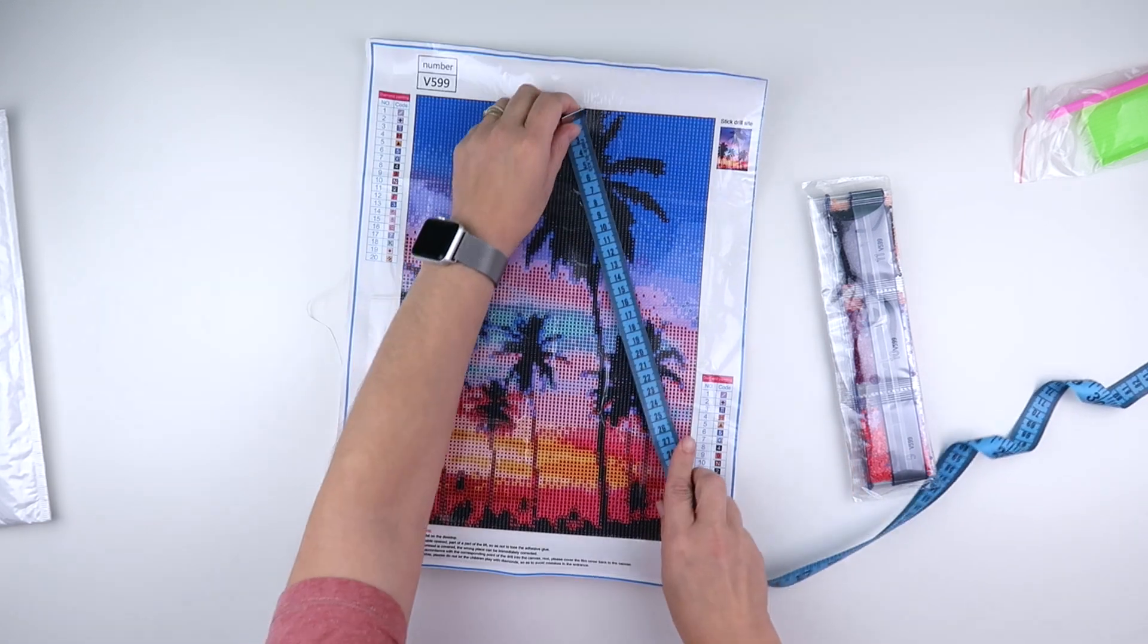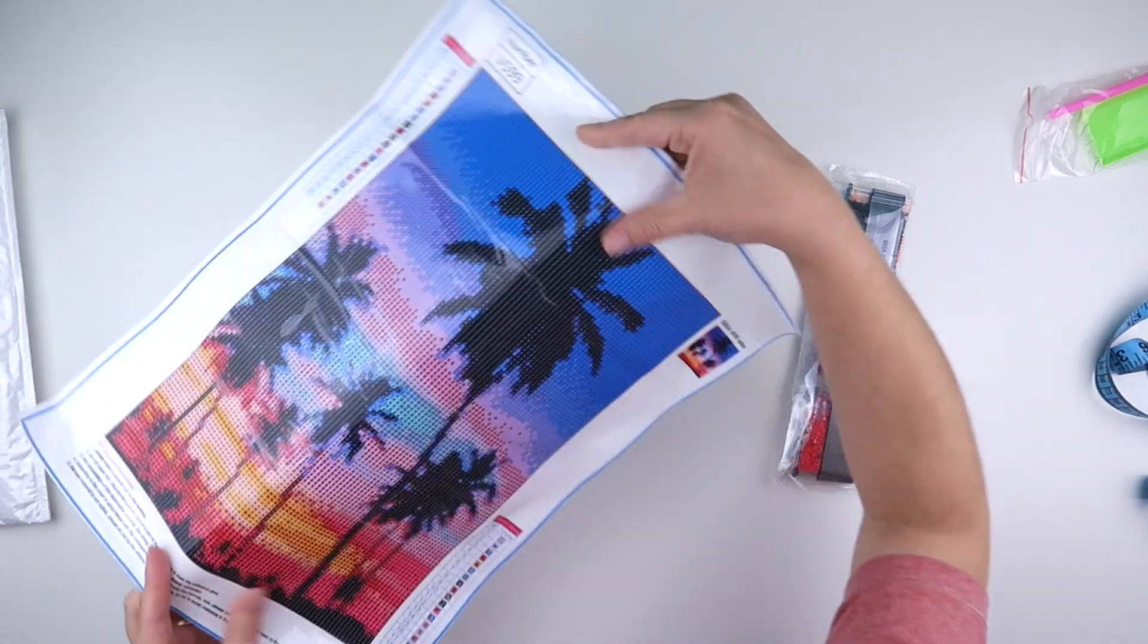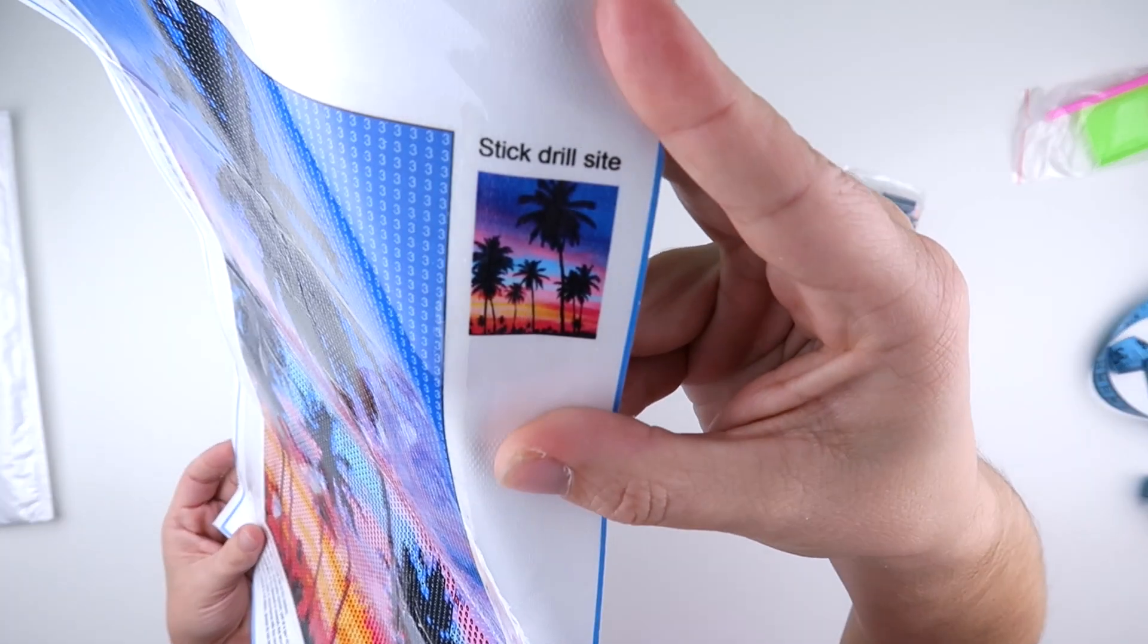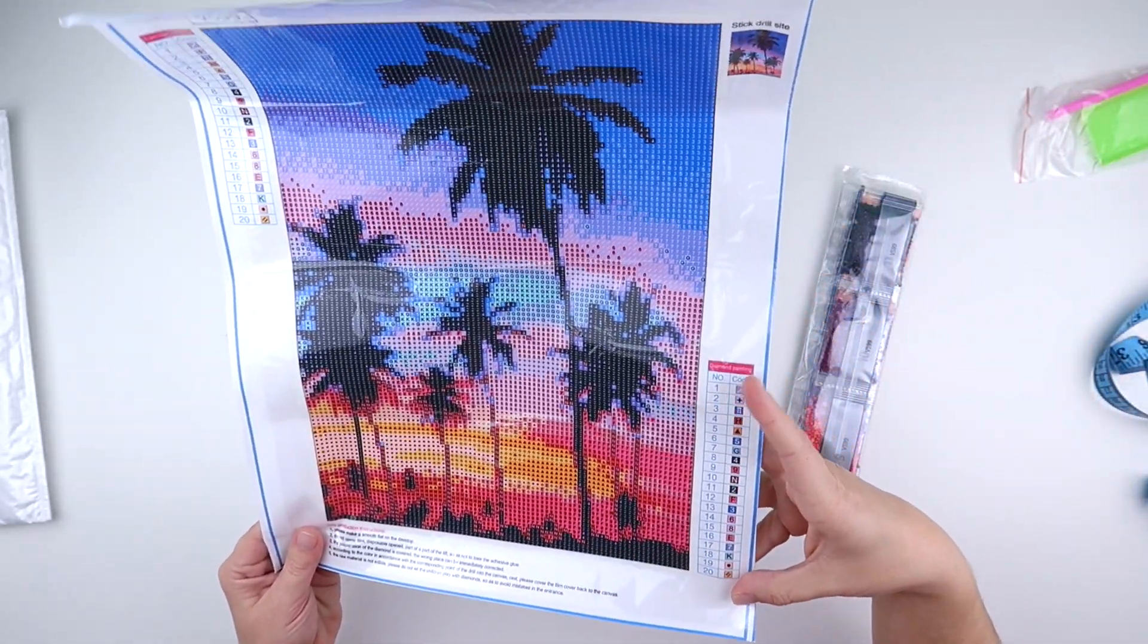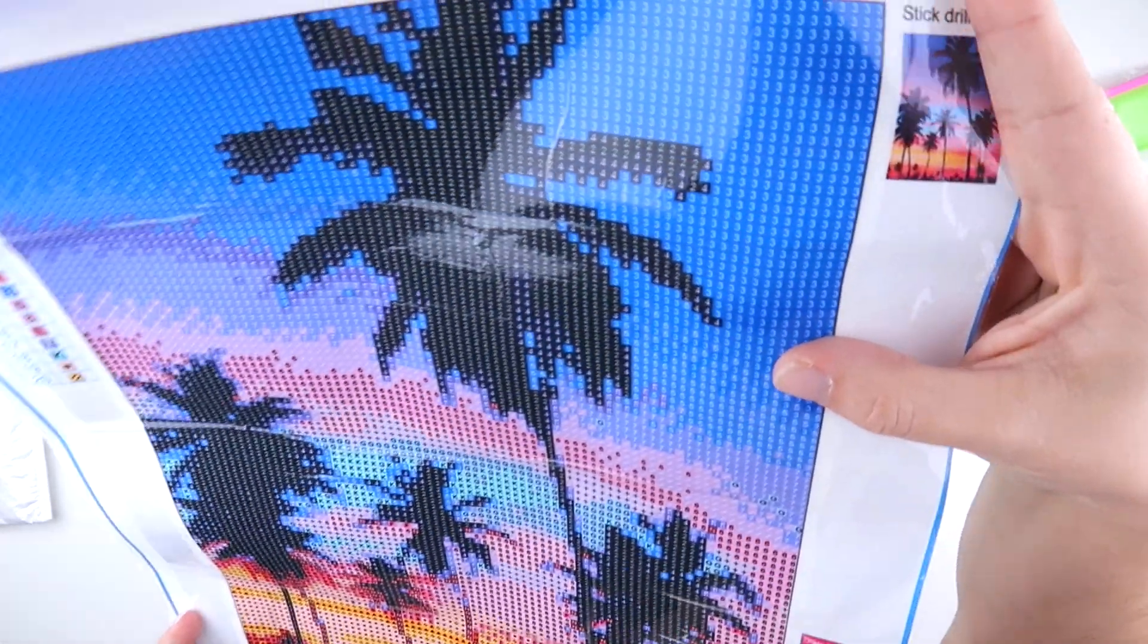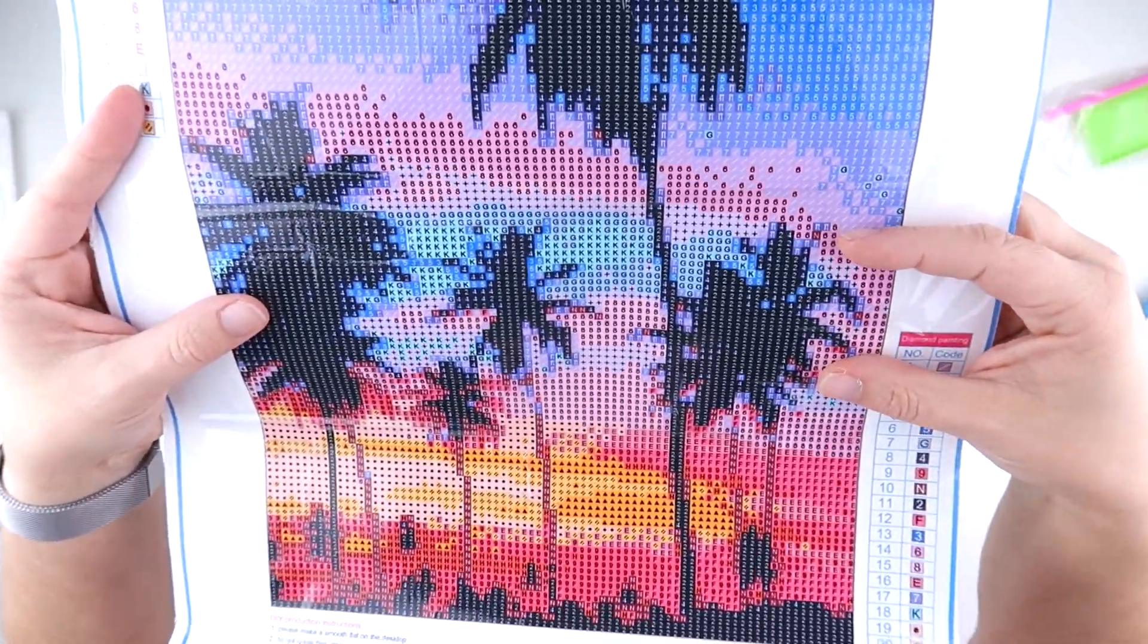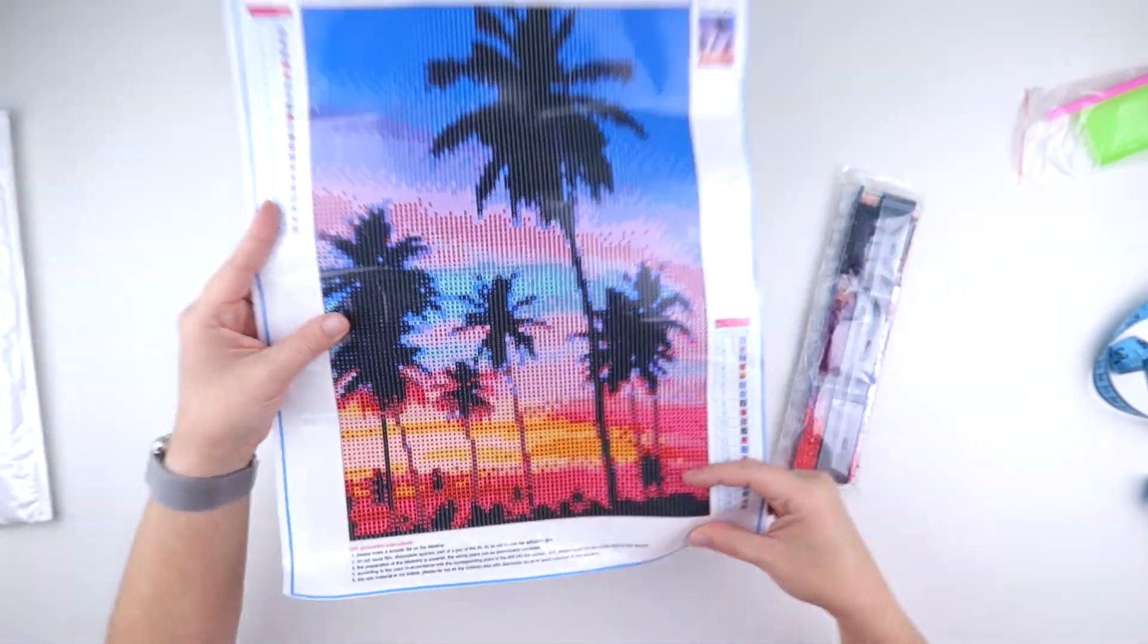Yes, we are only 23 across on this one and 33 down. So quite a big border, less place to diamond paint, but you can still make out the image, which is some gorgeous silhouette palm trees with a nice bit of colour. We do have 20 colours. The symbols are a mixture of symbols and letters, but they are clear. They use white on black on the darker colours, and then they use black on the lighter colours. So you can make them all out, which is good.